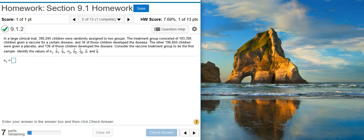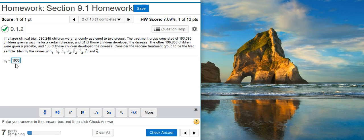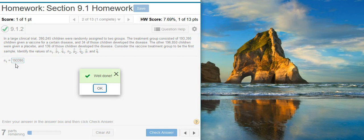Identify the values of N1, P-hat 1, Q-hat 1, N2, P-hat 2, Q-hat 2, P-bar, and Q-bar. The first thing we're asked to provide is the sample size for the first sample. The problem statement says that we're considering the vaccine treatment group as the first sample. So the sample size is given there in the problem statement, the total number in that first group that were given the vaccine, which here is 193,395. So I'm just going to put that here in my answer field. Well done!